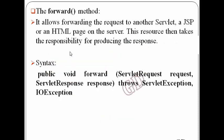The next method is the forward method. It basically allows forwarding the request to another servlet, a JSP, or an HTML page on the server. This resource then takes the responsibility of producing the final response. This is the syntax for the forward method. Again, this method also takes two parameters: the first is an object of the ServletRequest class, and the second is an object of the ServletResponse class, throwing ServletException and IOException.